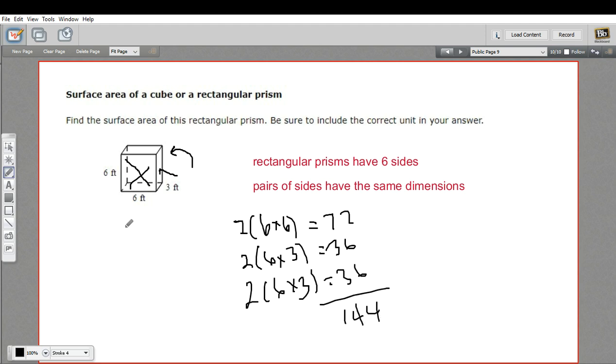And then we need to remember our units. We're in feet, but this is area, so it's going to be square feet. So that is how to find the surface area of a rectangular prism.